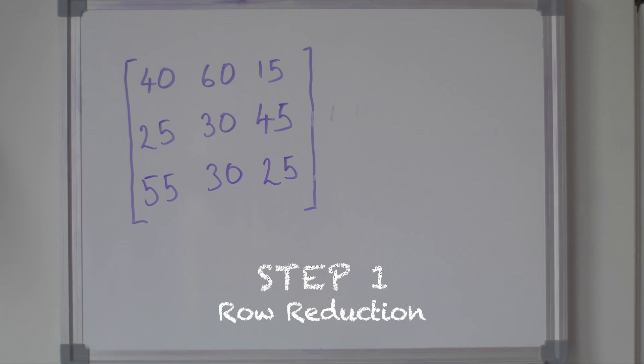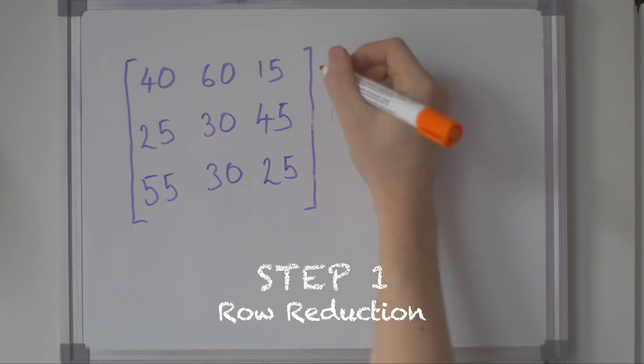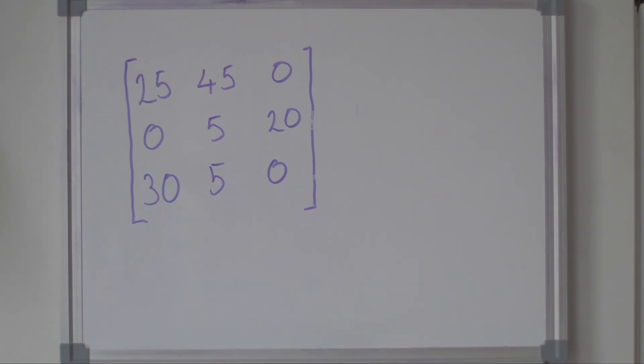Step one: row reduction. We're first going to find the minimum of each row. We're then going to subtract each row's minimum from every value in that row. This means that each row now contains at least one zero.